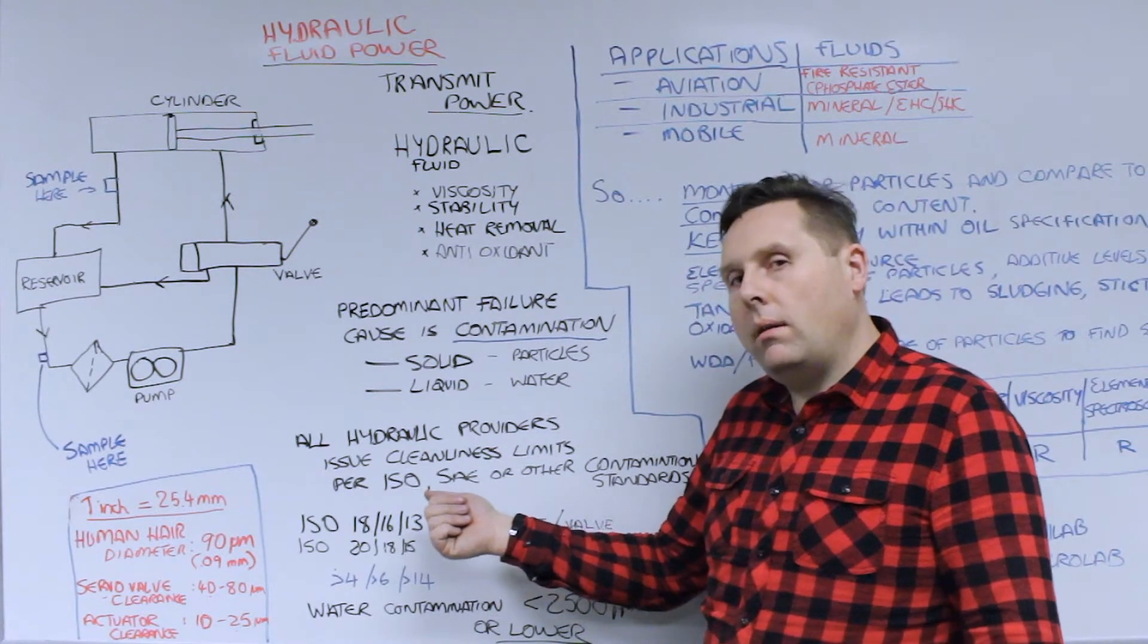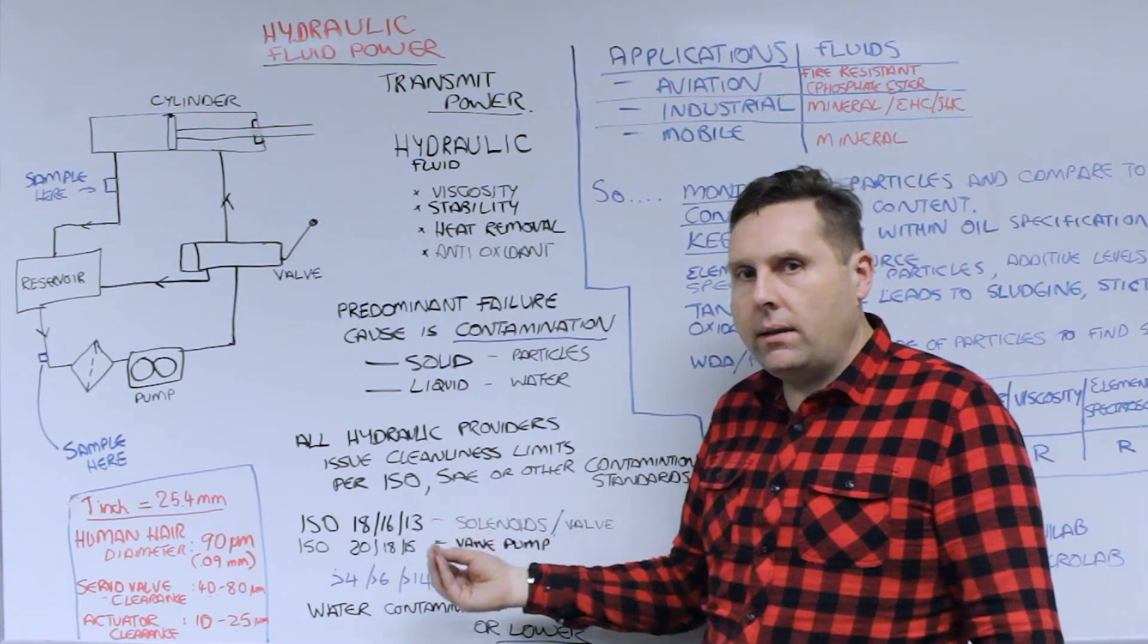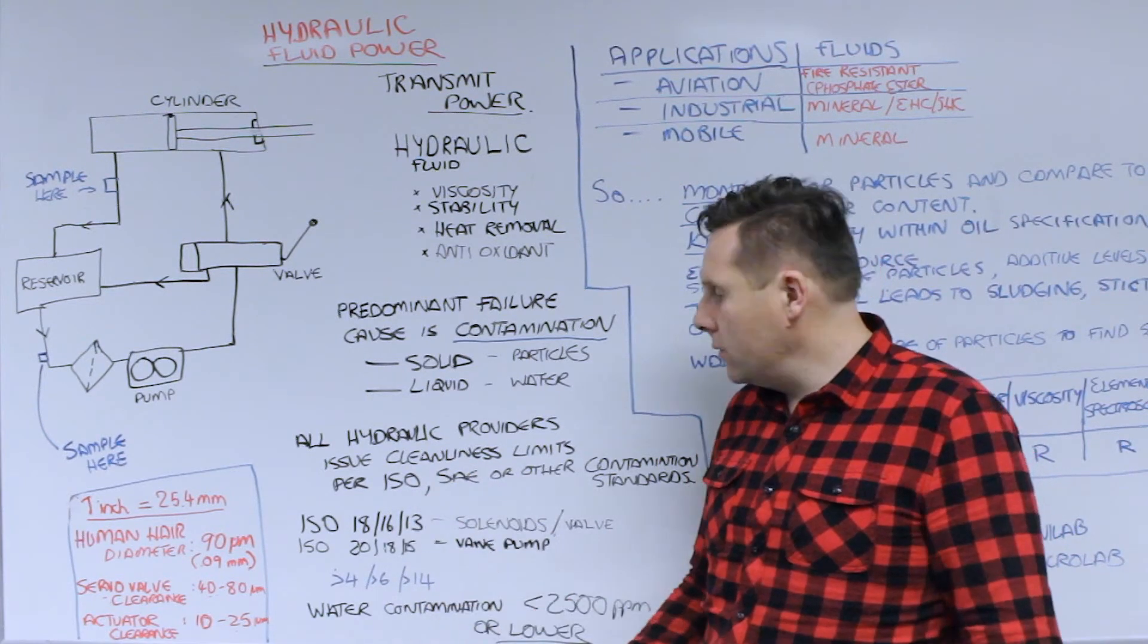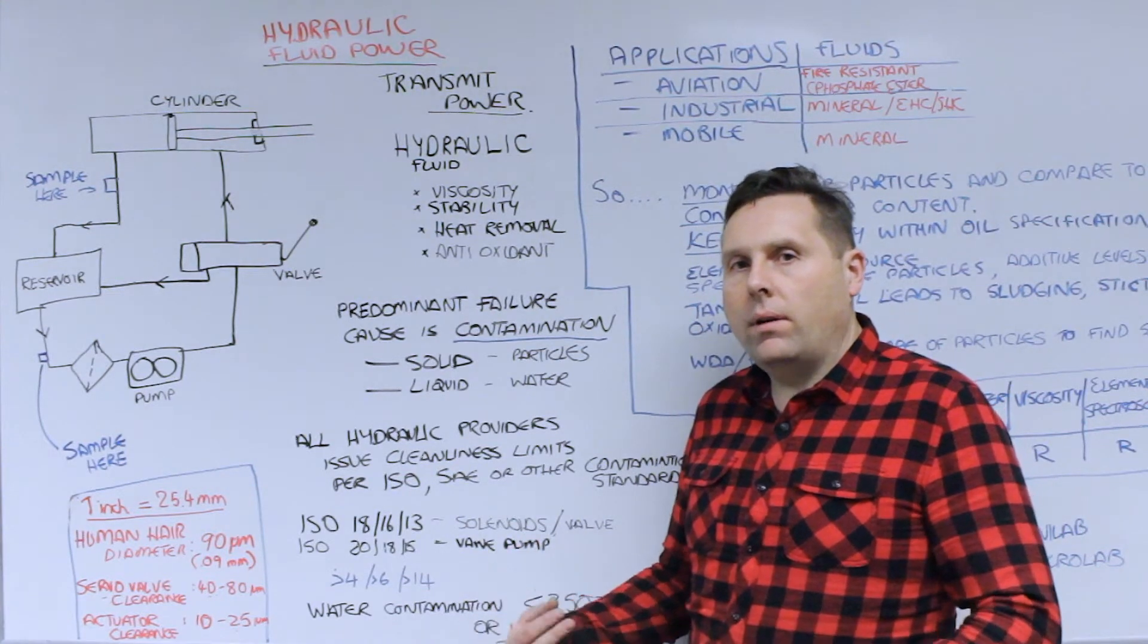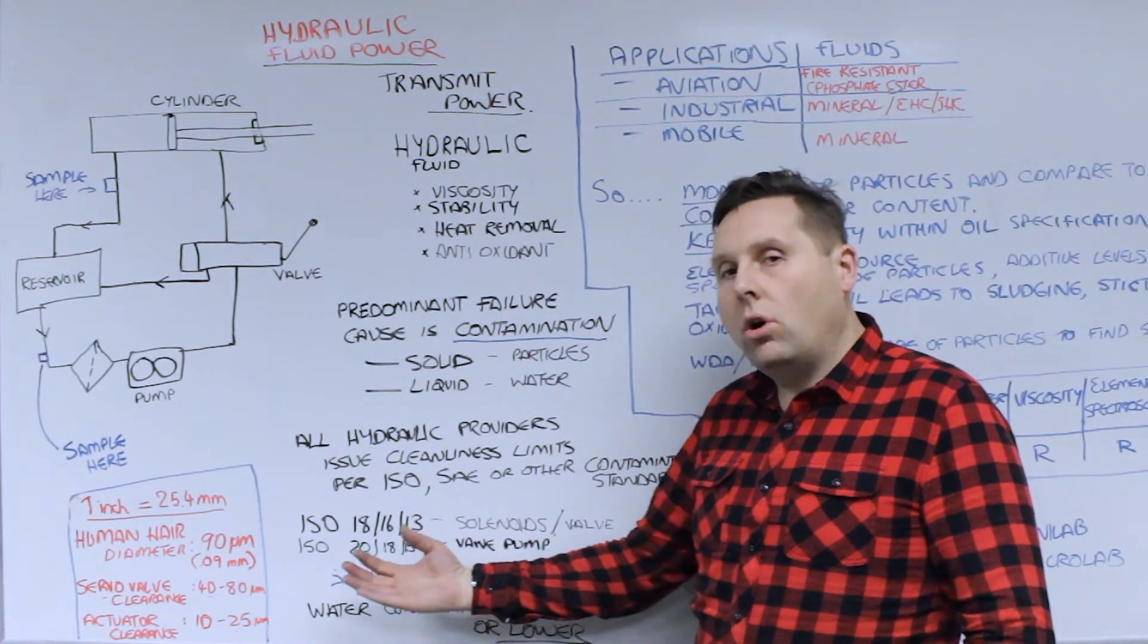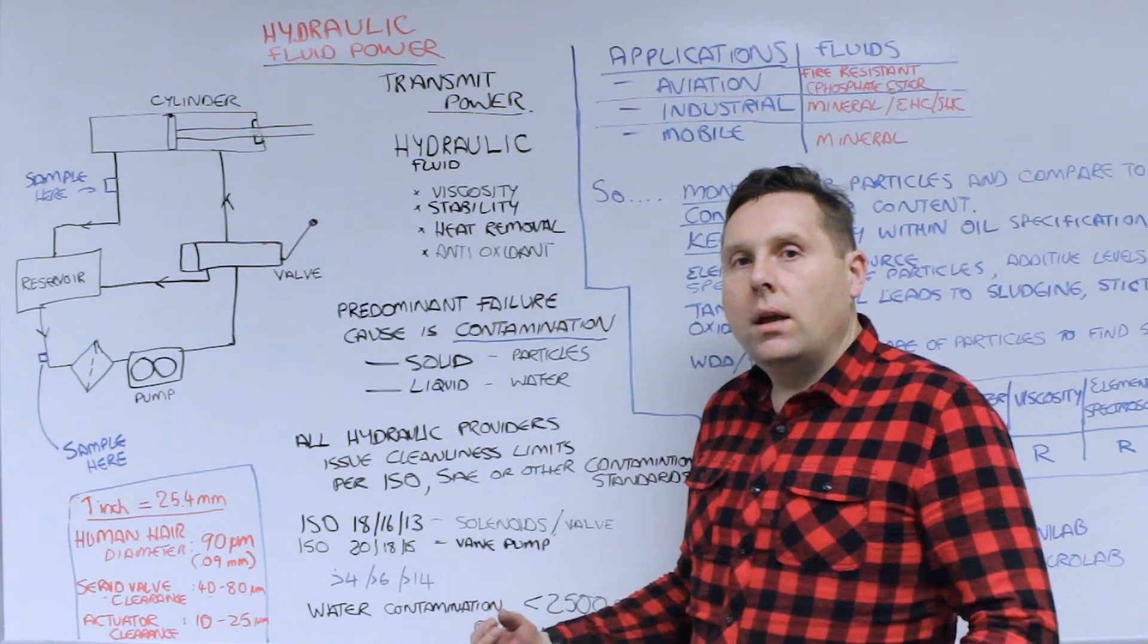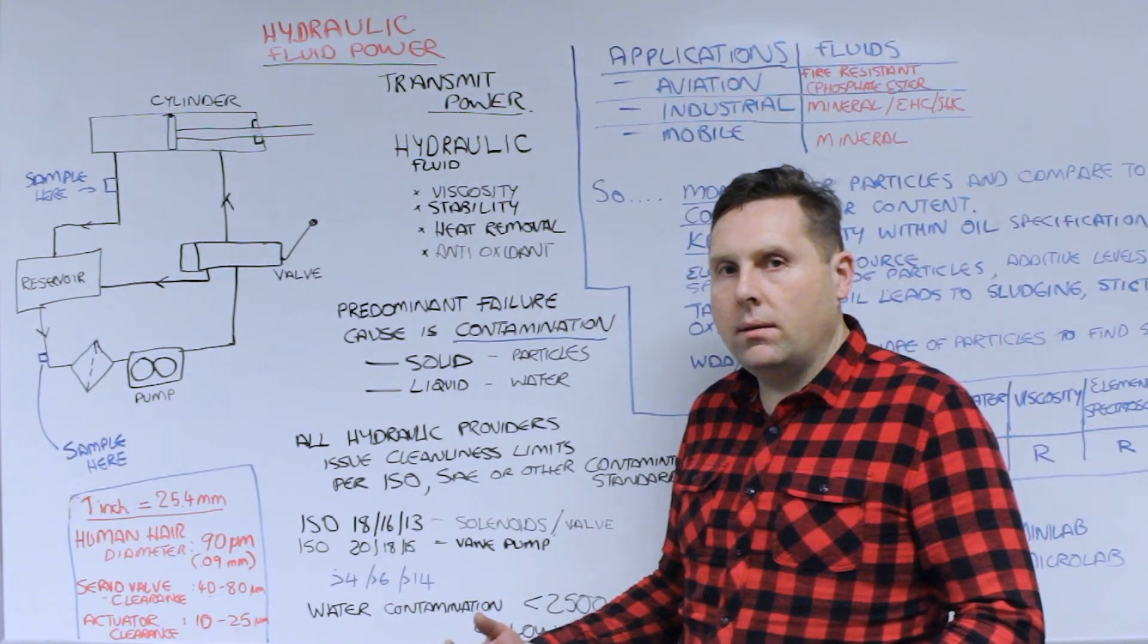Usually they form them with some sort of contamination code, be it from ISO, NAS, SAE. There's a variety of different societies and most providers of hydraulic systems and the filtration systems that work for them will talk in terms of these contamination standards.